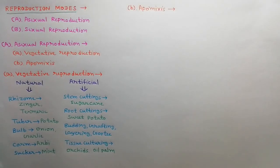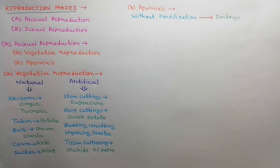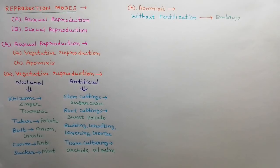Secondly, we will discuss about apomyxis. When embryo and seeds are developed without fertilization, it is called apomyxis. The genotypes of these progenies are identical to their parents.